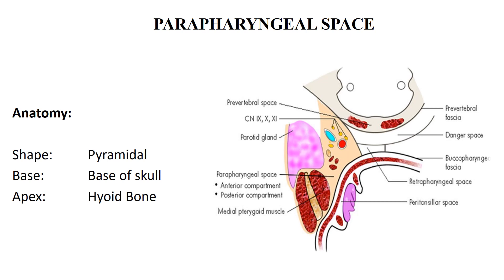The applied anatomy of the parapharyngeal space: the parapharyngeal space is a pyramidal inch shape with its base at the base of the skull and its apex at the hyoid bone. The parapharyngeal space communicates with other spaces including the retropharyngeal, submandibular, parotid, carotid, and visceral spaces.